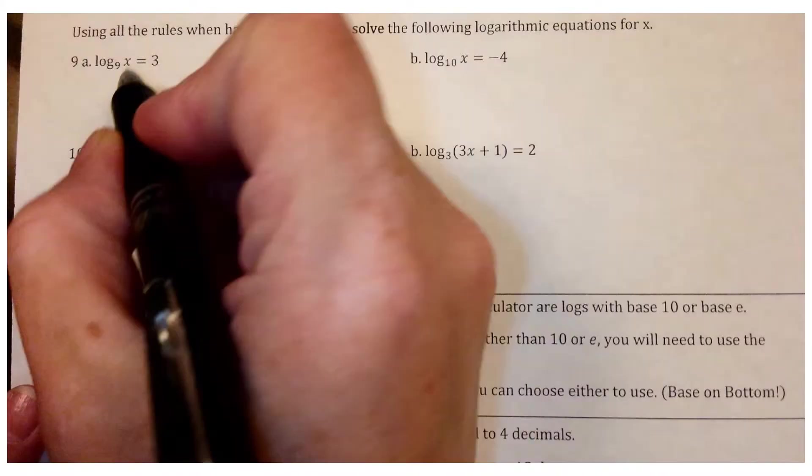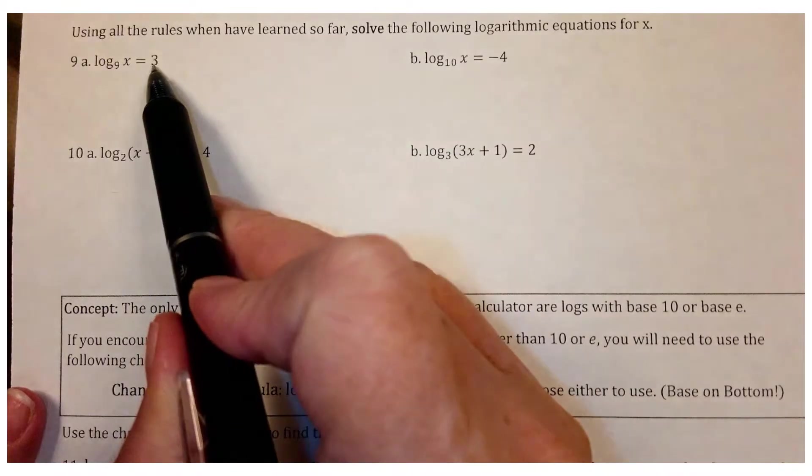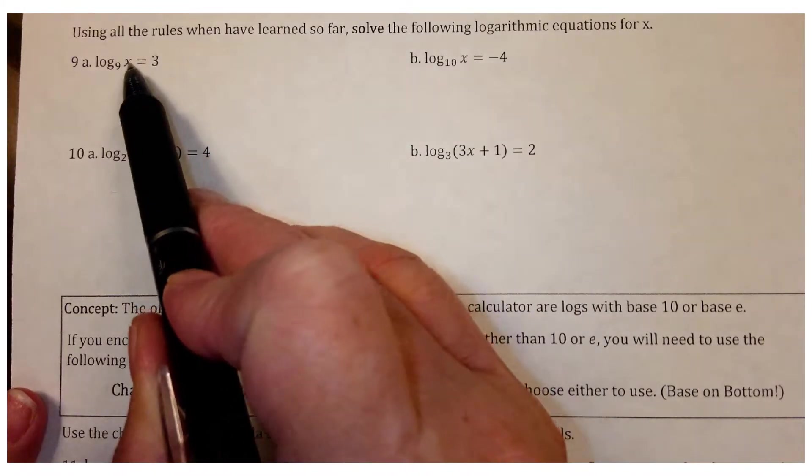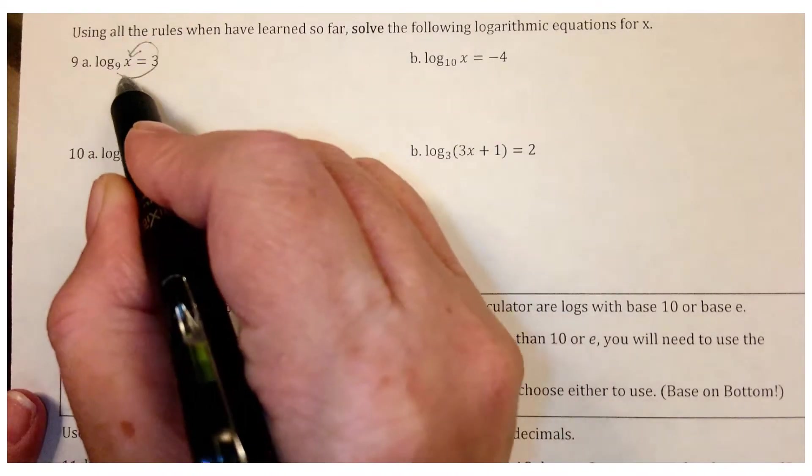So in this problem, we've got a base of 9. Our exponent will be 3 and it will equal x. So we can use that backwards C method again. 9 to the 3rd equals x.